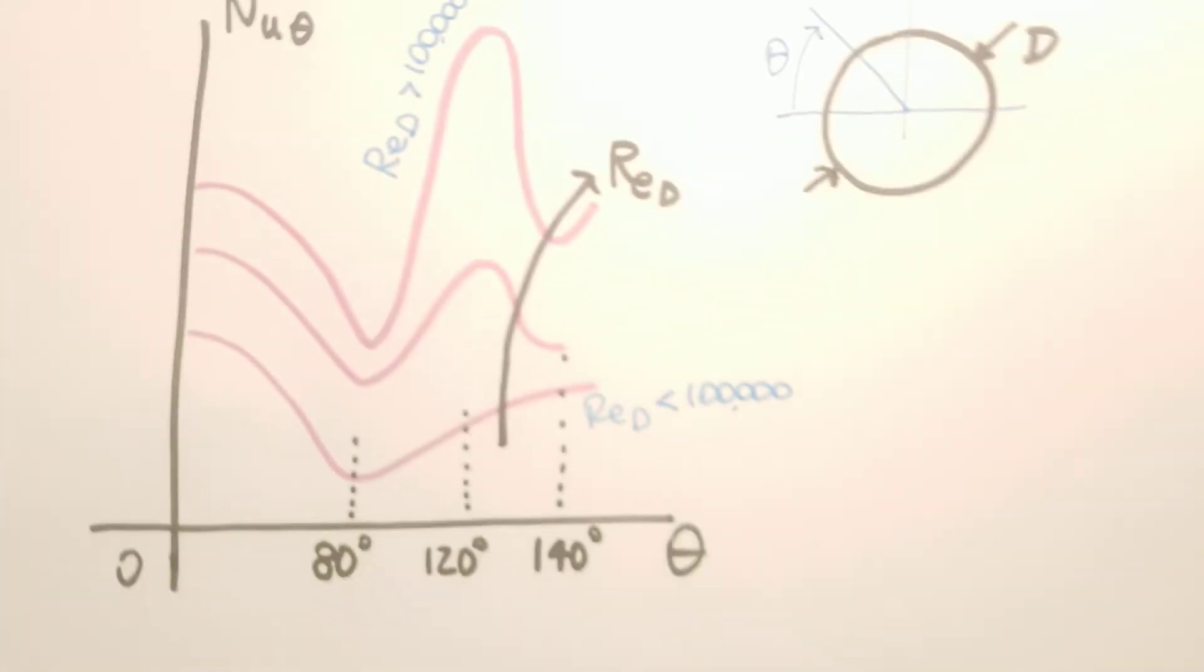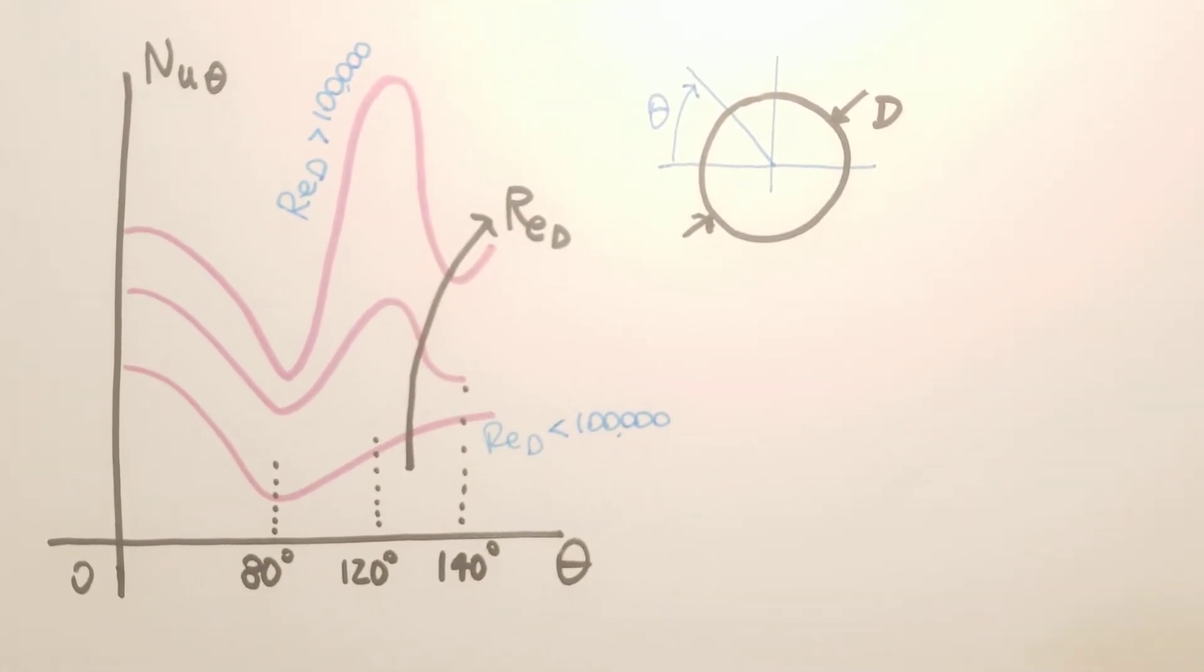So let's see what the Nusselt number looks like, how the Nusselt number changes at different Reynolds numbers as a function of theta.